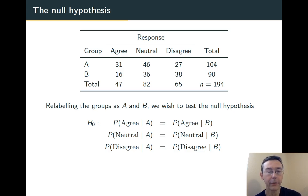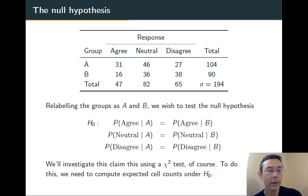So we've got a null hypothesis that the probability of agreeing with that statement is the same in either group. The probability of being neutral is the same in either group, and so on. We want to use a chi-squared test on this table, and in order to do that, we're going to need expected cell counts, of course, as usual.